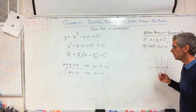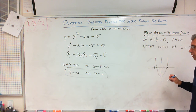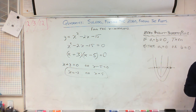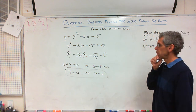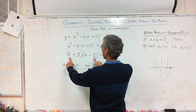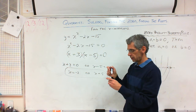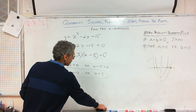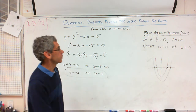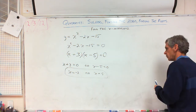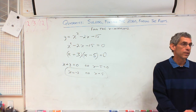On the graph, those would be my x-intercepts at negative 3 and at 5 — so the parabola would look something like that. You'll be doing a lot of these, and a lot of them in Algebra 2 as well. It's a really important concept in Algebra.